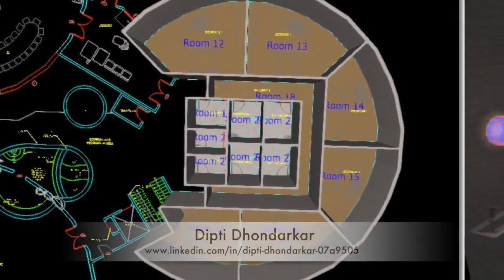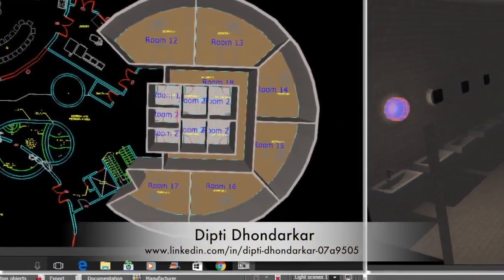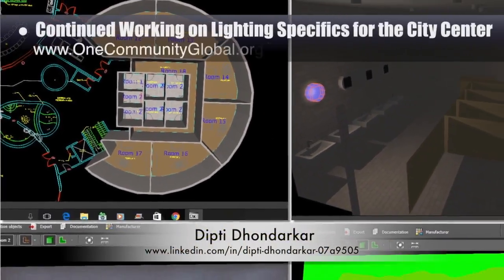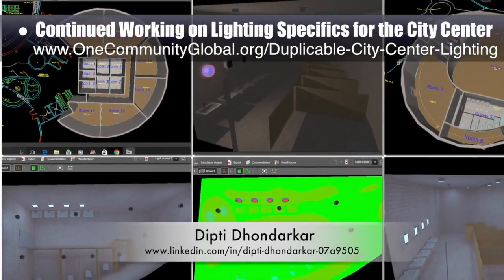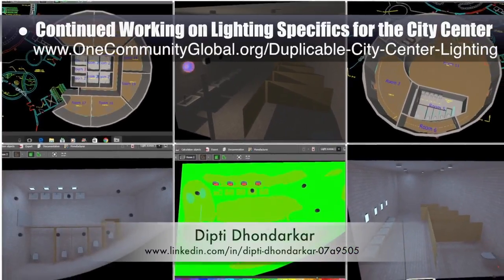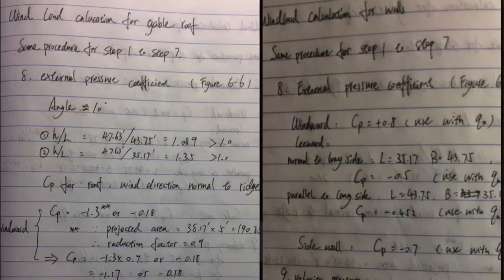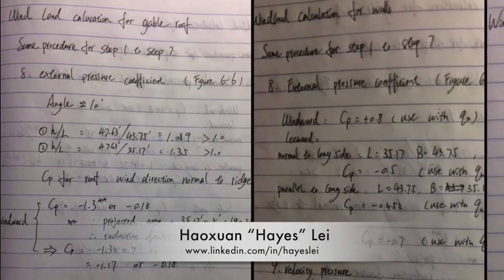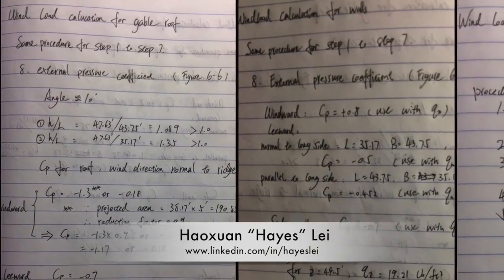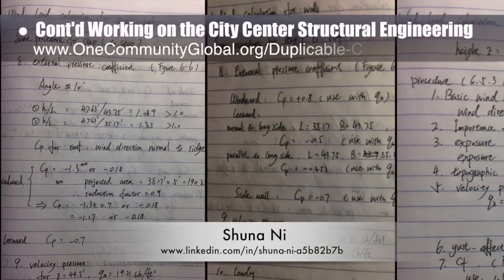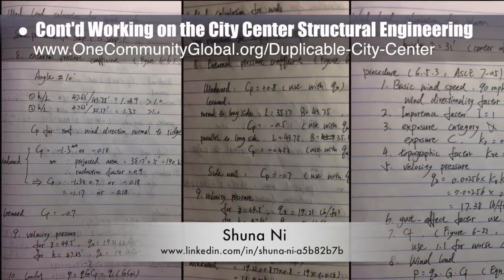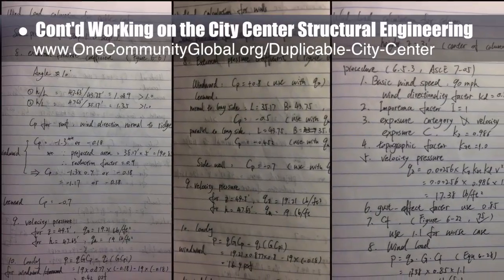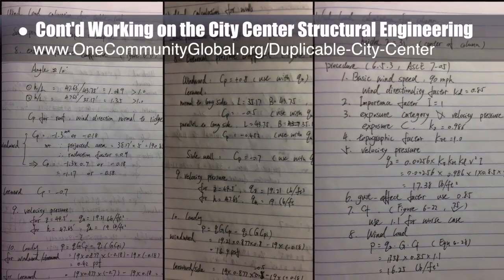Dipti Dondarkar, electrical engineer, continued her 35th week of work on the lighting specifics for the city center. This week's focus was finishing the lighting analysis and placement for the two public bathrooms in the social dome. Hayes Lay, structural engineer, and Chuna Ni, Masters of Mechanical Engineering and Civil Engineering PhD, continued their work on city center structural engineering, with this week's focus on continuing the wind calculations for the structure.